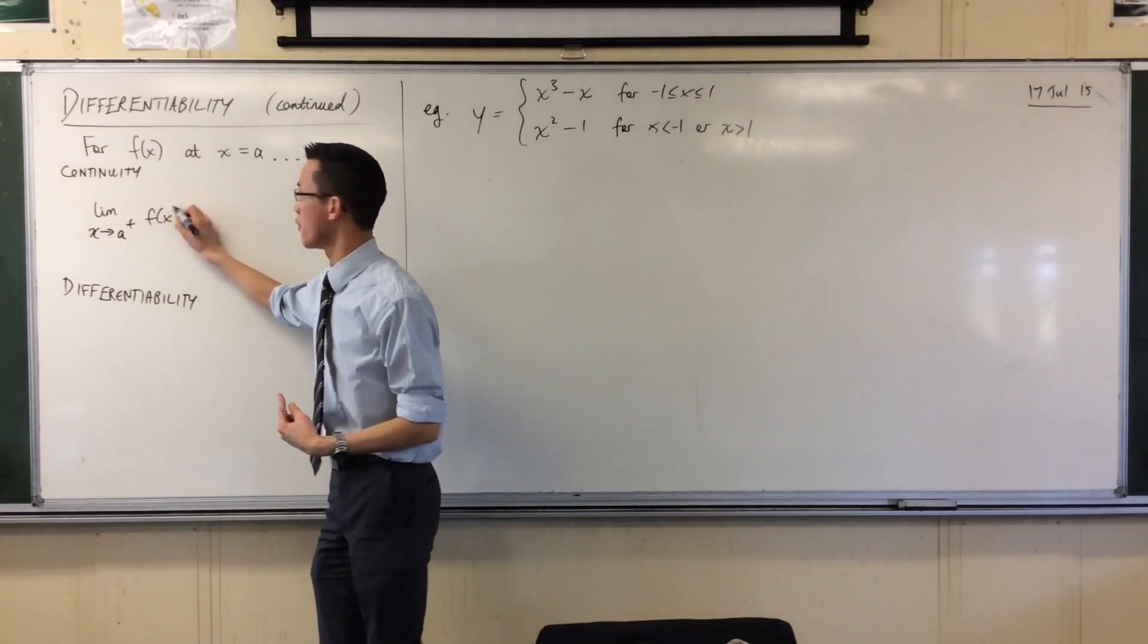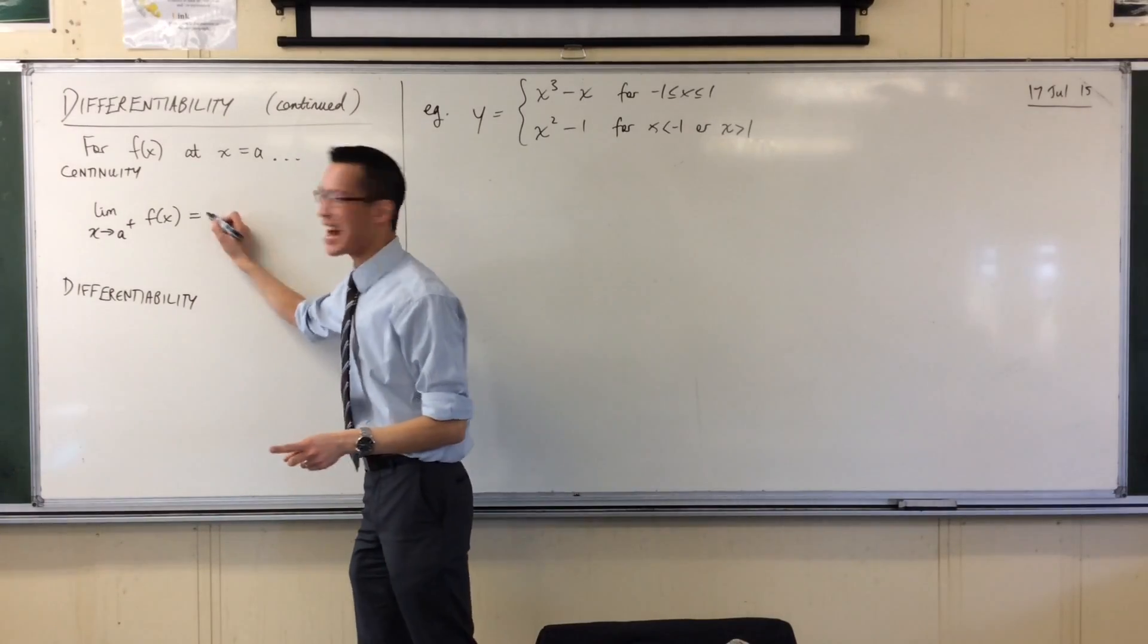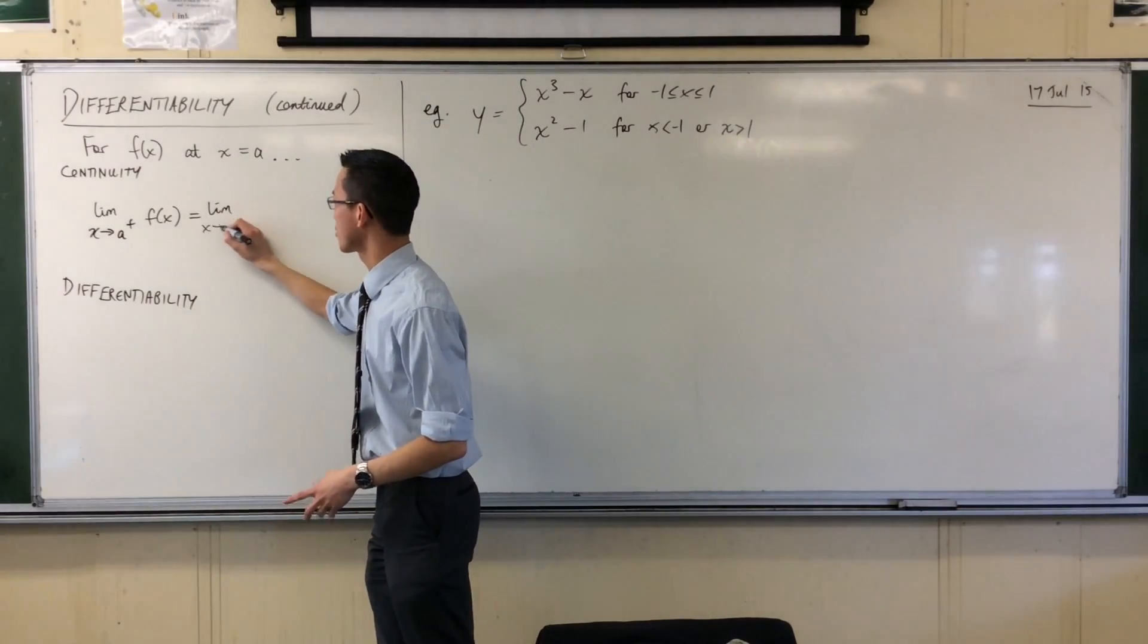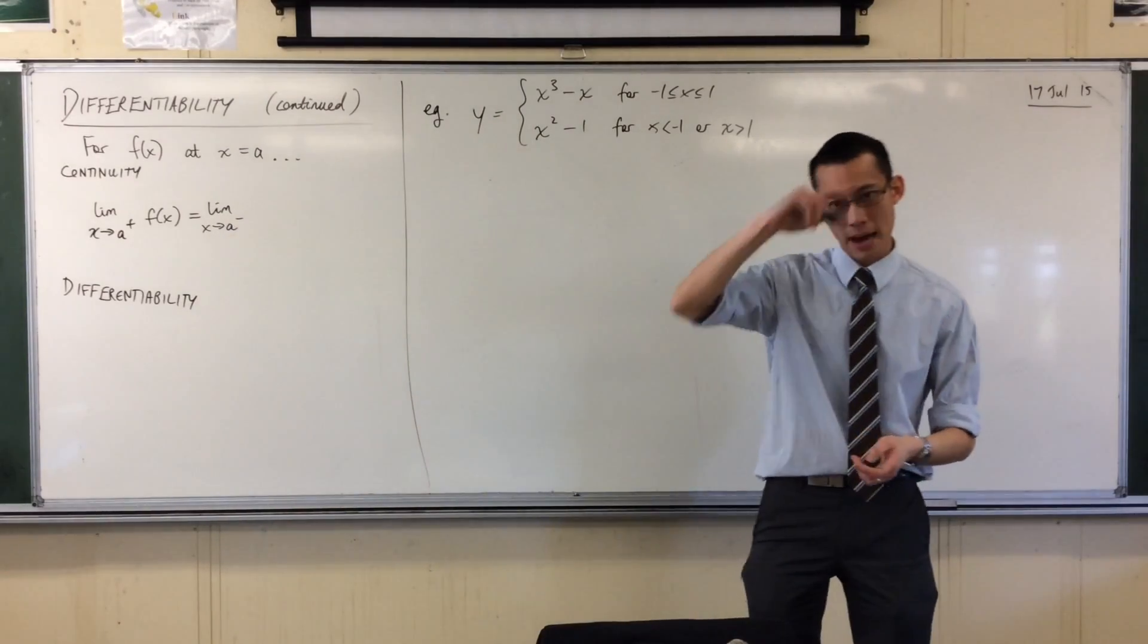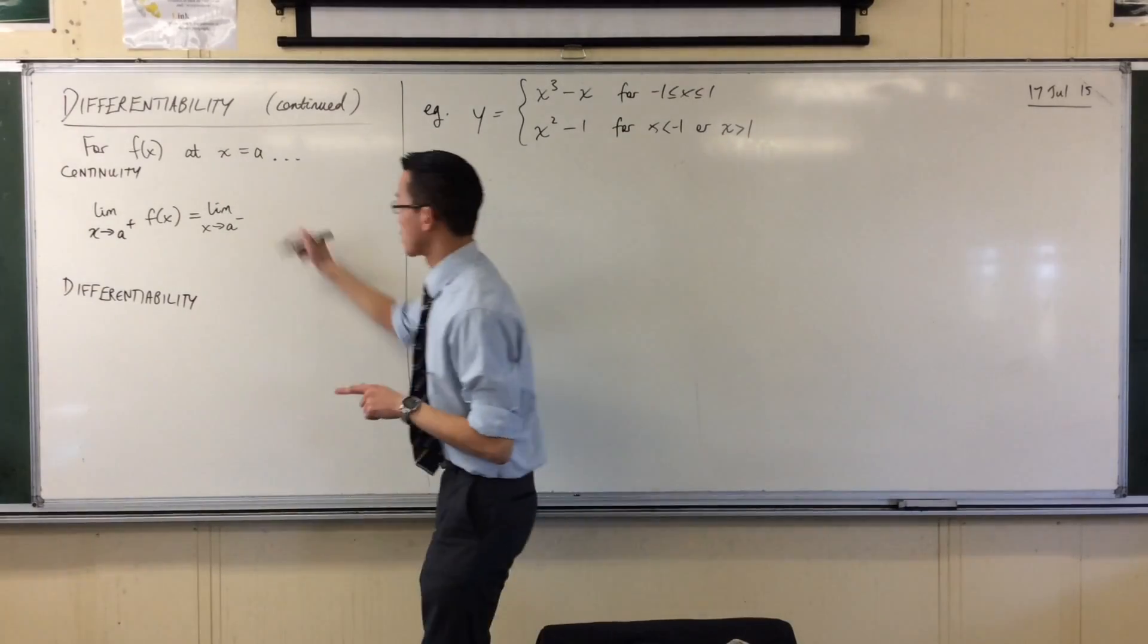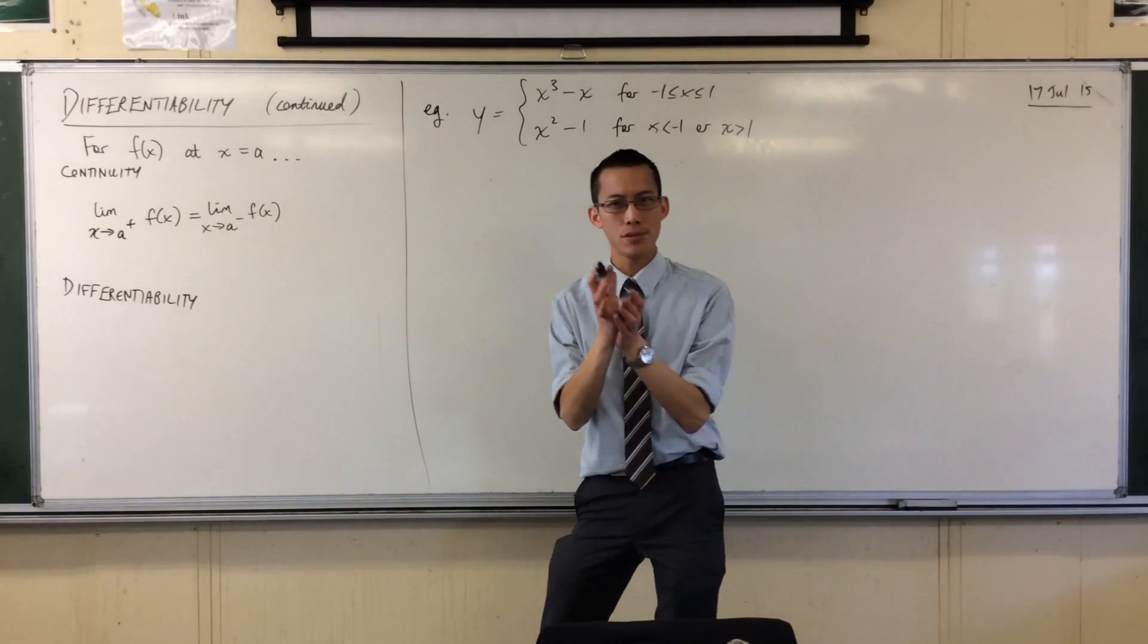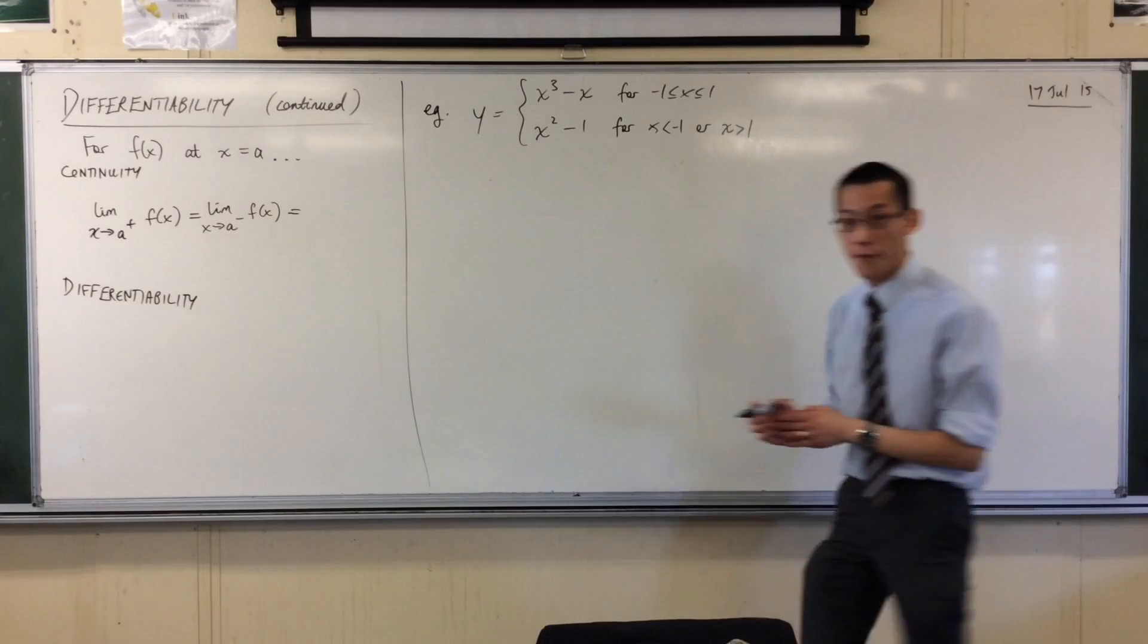And I want to know what's happening to f of x. I want that to be doing exactly the same thing as what happens if I approach but from the opposite direction. So a with the minus means come from lower values, come from below, so that's from left to right. We want to see what's happening f of x from that direction, and both of those should also be equal to a third thing. Do you remember? f of a. Good, f of a.